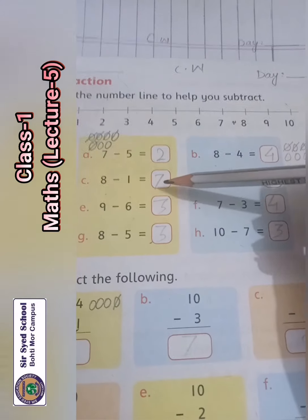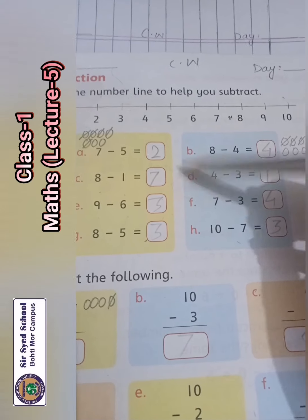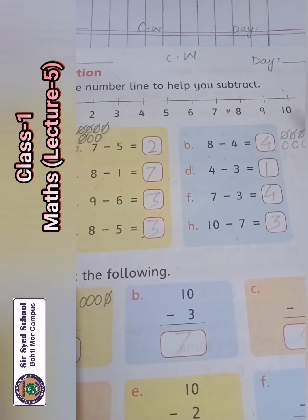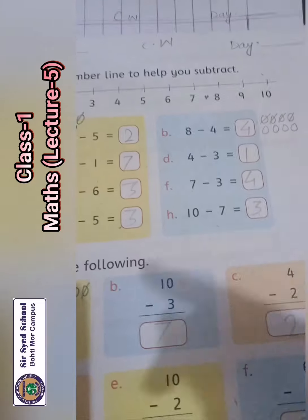8 minus 1, 8 balls and cut. 4. 4 minus 3, 4 balls and cut. My answer is 1.